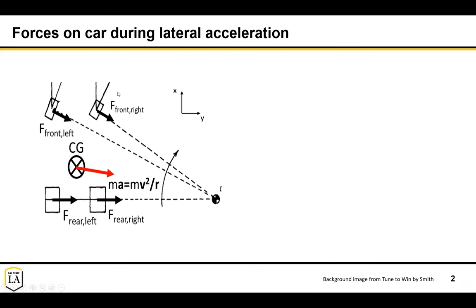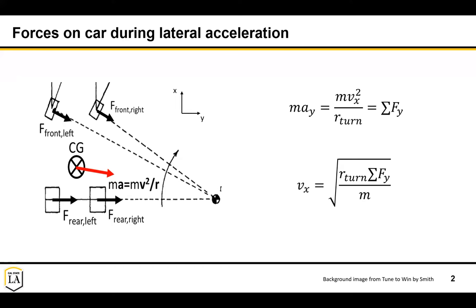This vehicle is making a right-hand turn around the center of the turn. To do this, it has a centripetal acceleration as a result of a centripetal force - mass times acceleration - with the acceleration being v squared over r. What's generating this force on the vehicle are the forces on the tires from the ground, and each one of these generates some component towards the center.